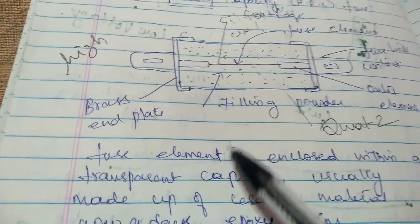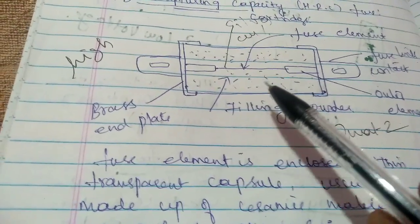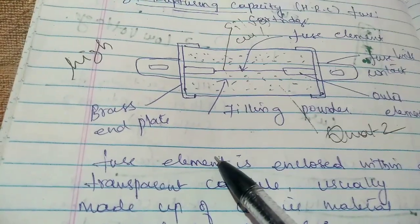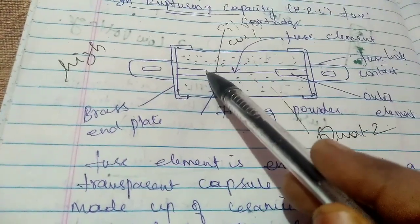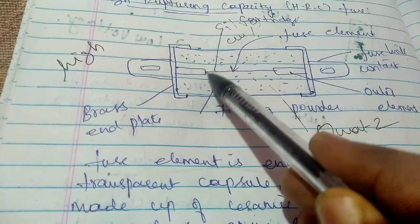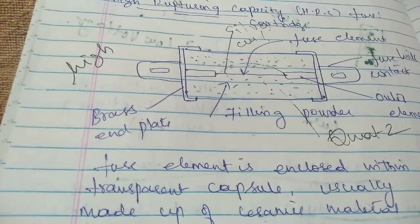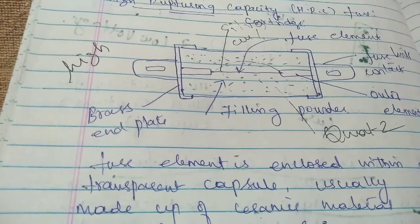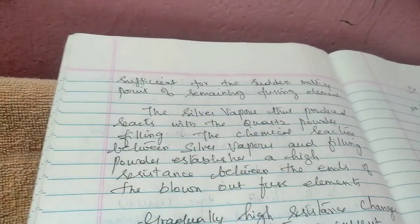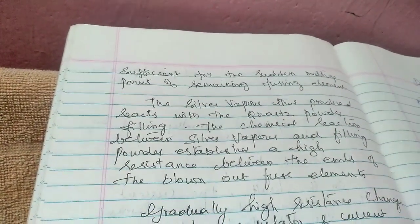Once the temperature of the element rises, then it starts melting. If it starts melting, there would be an arc extinction. This arc extinction would be sufficient for melting the rest of the fusing element.